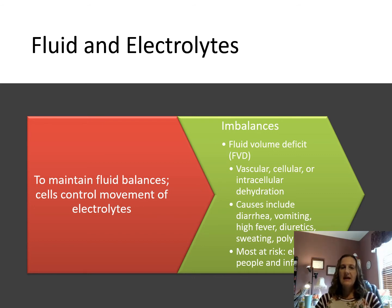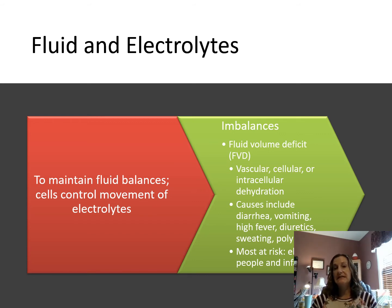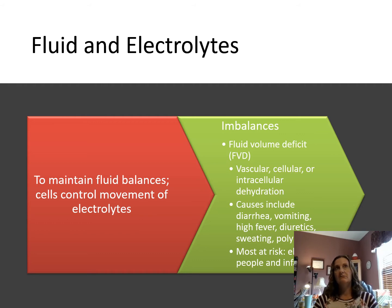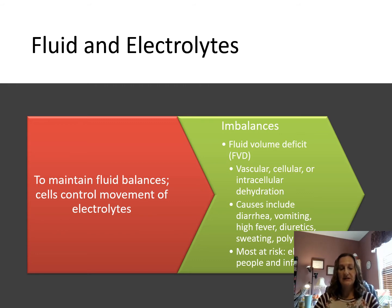To maintain fluid balance, we must look at imbalances that can occur. FVD, or fluid volume deficit, can involve dehydration at the cellular, vascular, or intracellular level. Causes include vomiting, diarrhea, high fever, improperly used diuretics, profuse sweating, and polyuria. Those most at risk are typically the very young and the very old.